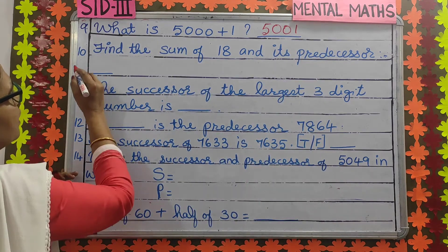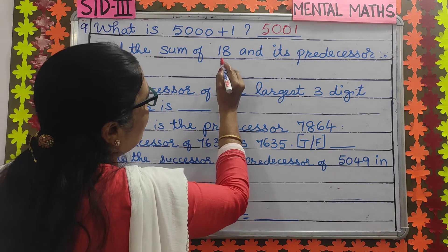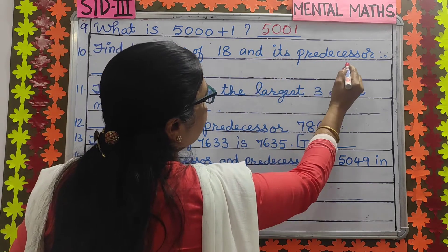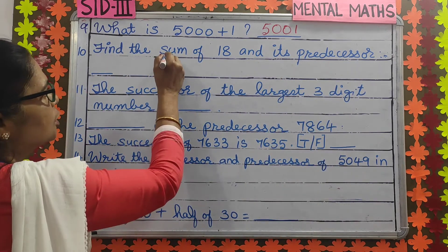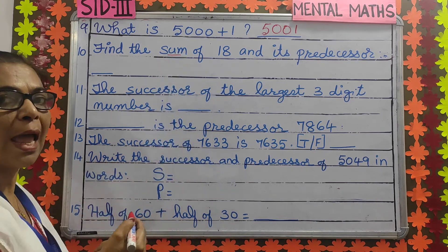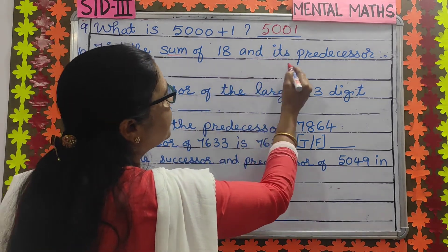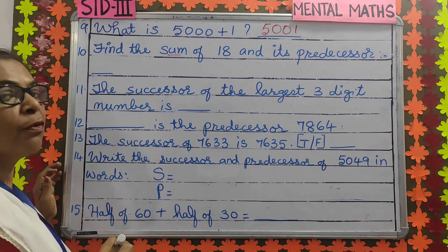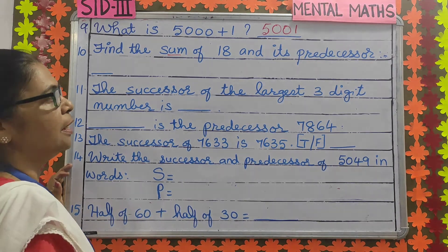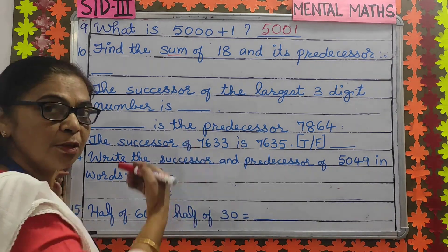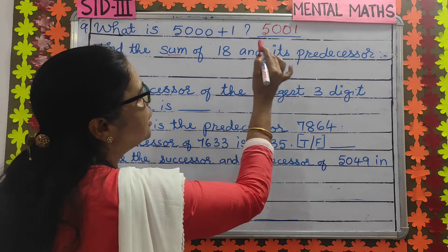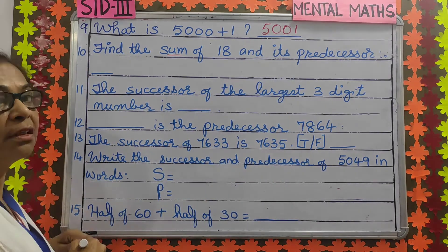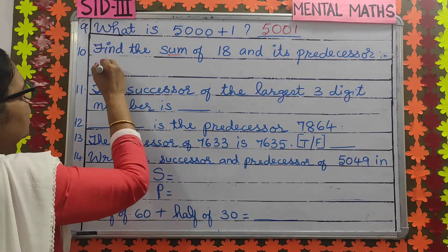Number 10: find the sum of 18 and its predecessor. Sum means you have to add 18 and its predecessor. What is the predecessor of 18? 17 — the number just before 18. So 18 plus 17 is 35.